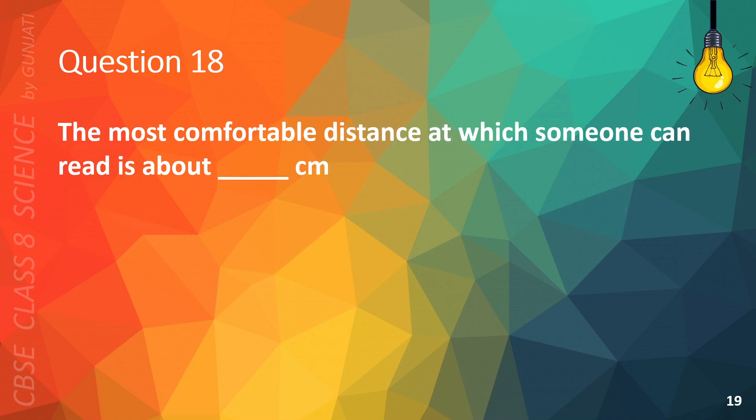Question 18. The most comfortable distance at which someone can read is about blank centimeters. A. 5, B. 15, C. 25, or D. 35. The correct answer is C, 25.